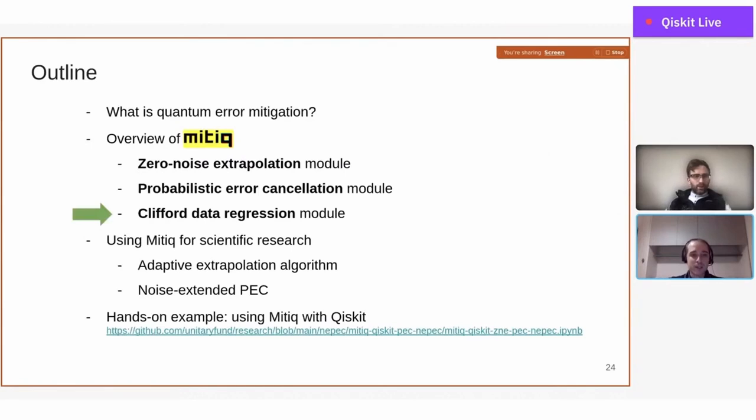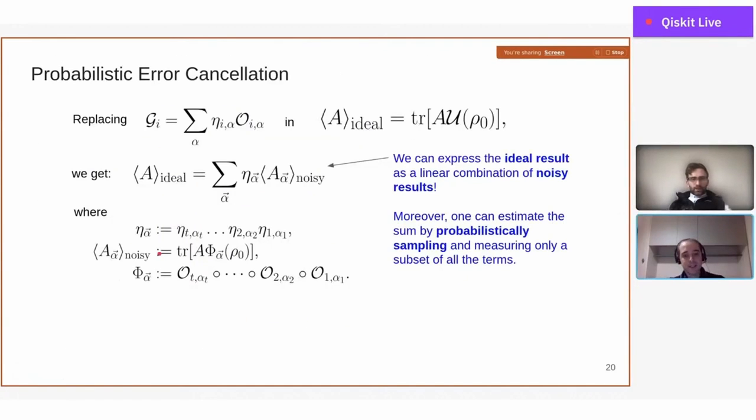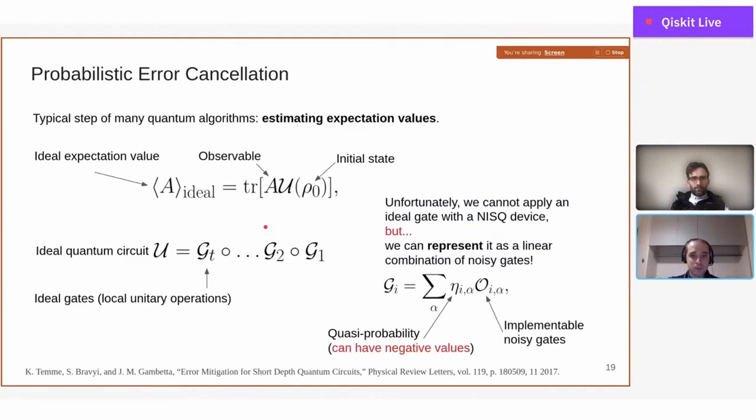I will skip—there was a question from Anna about how do you compute the etas, the eta coefficients in the noisy observables. That's a good point, because in principle even these etas are exponentially many, so you cannot measure all of them. But what you can do is that you can sample. Maybe the question is how can I build this representation, not how can I compute the etas, right?